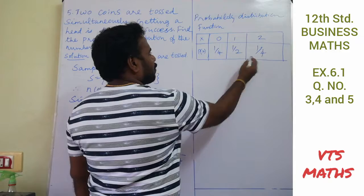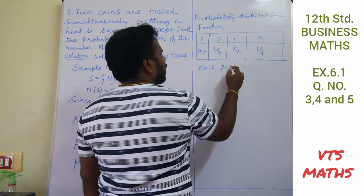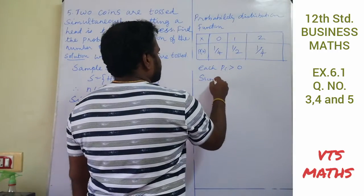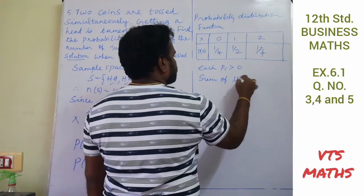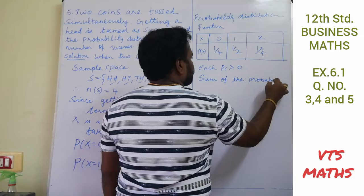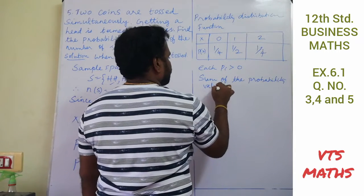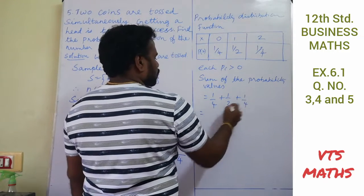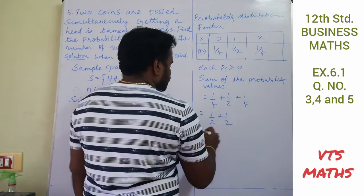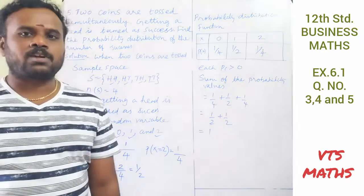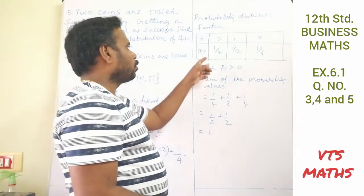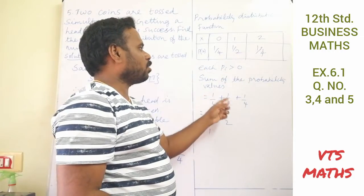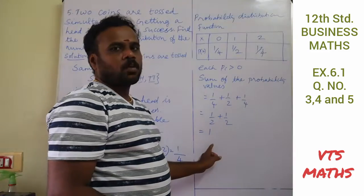To verify the probability distribution, each probability value is positive (greater than 0). The sum of all probability values: 1/4 + 1/2 + 1/4 = 1/4 + 2/4 + 1/4 = 1. Both conditions are satisfied, confirming this is a valid probability distribution.